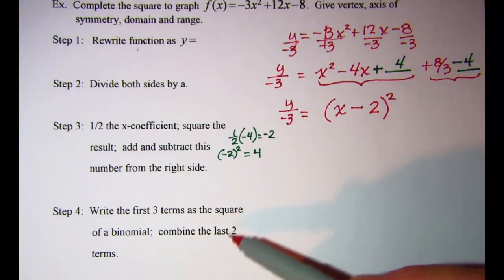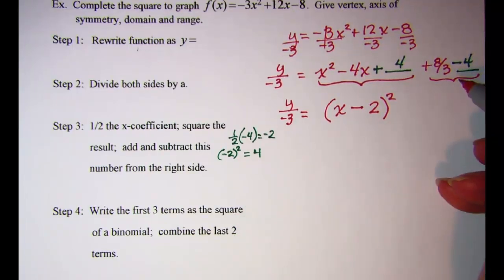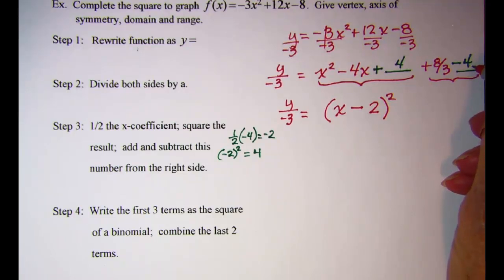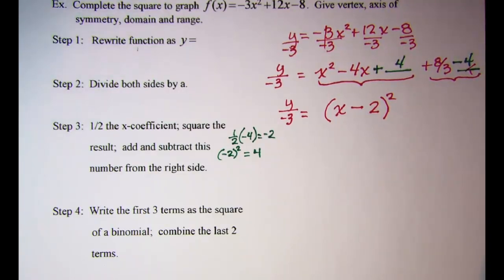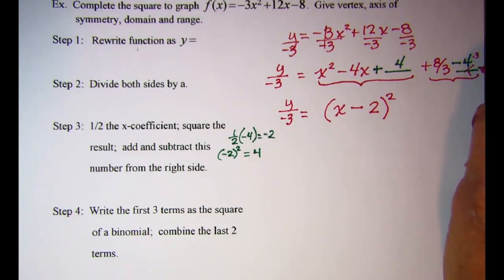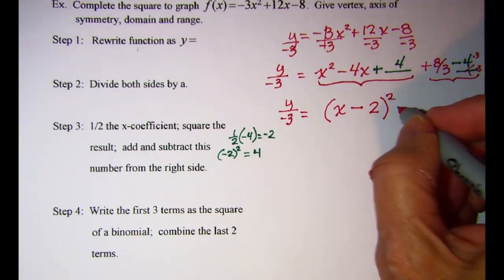Also in step 4, I want to combine these last two terms. Just do the math. A positive 8 thirds and a negative 4. This is the same as negative 4 over 1, so I'll multiply top and bottom of that fraction by 3 to get a common denominator. So I have a positive 8 thirds and a negative 12 thirds, which will be a negative 4 thirds.